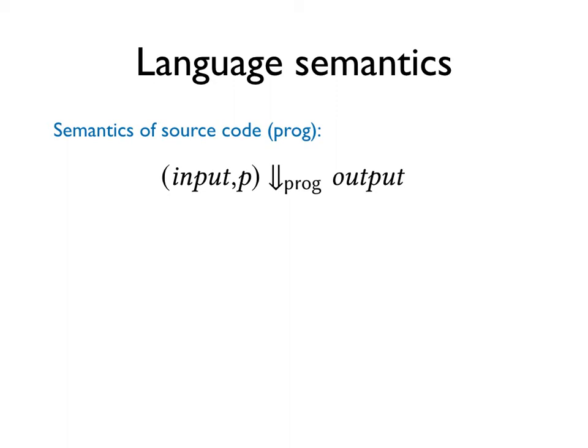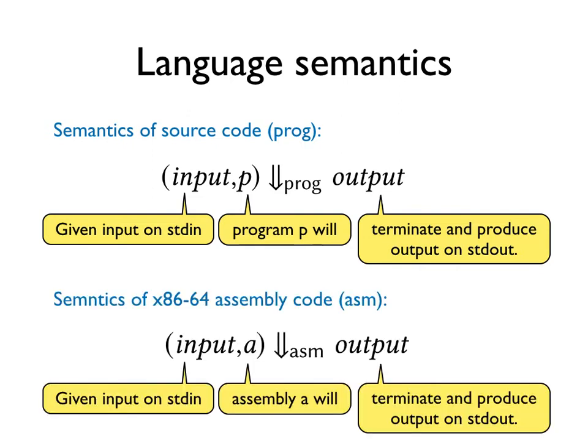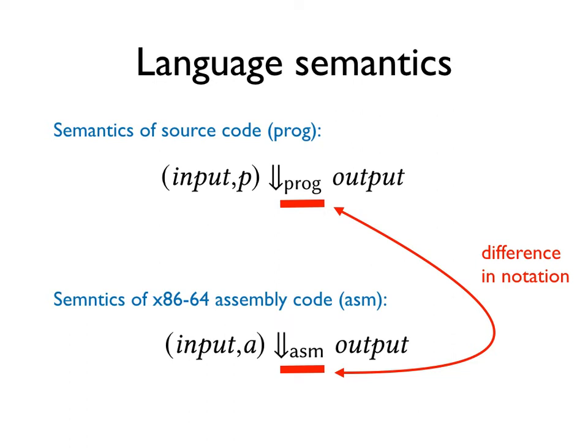Moving on to the semantics. For the source semantics, we have a judgment which is to be understood as follows. Given input called input on standard in, program P will terminate and produce output called output on standard out. For the target semantics, we have a similar judgment with a similar meaning. Note that the subscript PROG and asm indicate which semantics we are talking about.